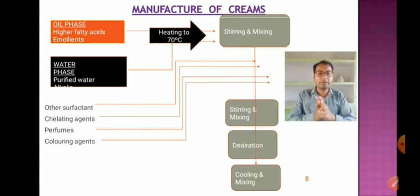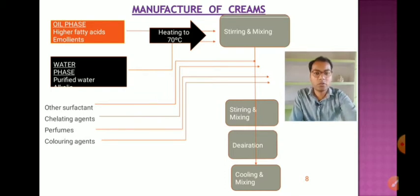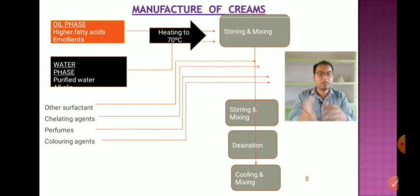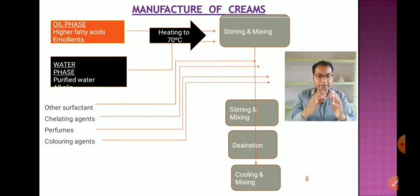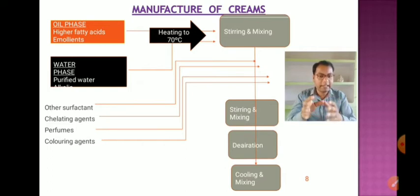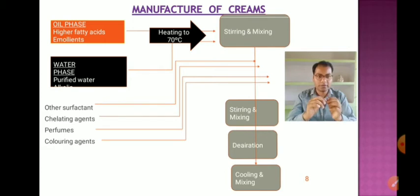For manufacturing creams: the oily phase and water phase are heated separately to 70°C along with the emulsifying agent or surfactant, then stirred and mixed thoroughly. Other surfactants, chelating agents, perfumes, and coloring agents are then added and stirred continuously. De-aeration is performed to remove entrapped air bubbles, and finally the mixture is cooled to obtain the finished cream formulation.